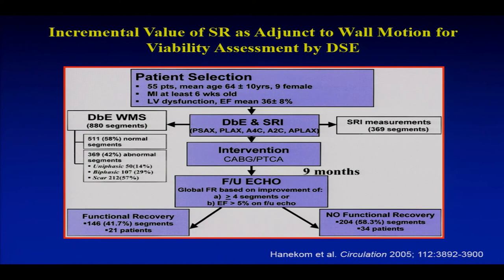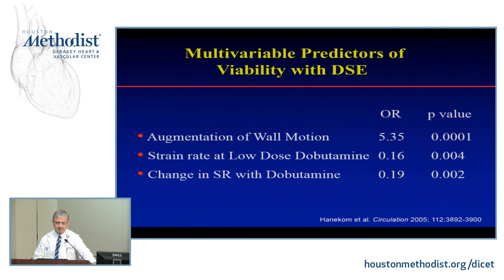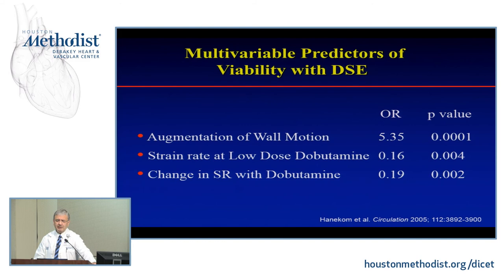Most laboratories are not using strain quantitation in real time, but some quantitation does add value. Data from Tom Marwick's group in Australia showed that augmentation of wall motion — visual interpretation — has the highest odds ratio. You can add strain or change in strain rate with dobutamine, which adds something, but it is certainly not as significant as what you see with the eye. That is why people have stuck with qualitative interpretation.